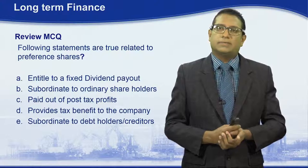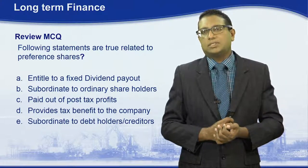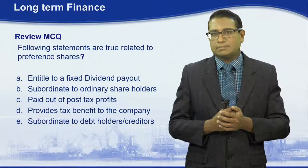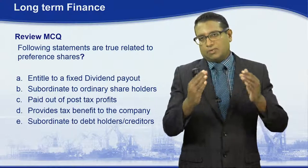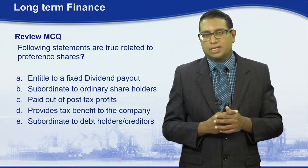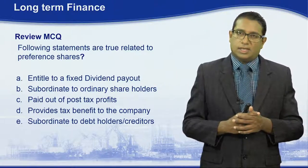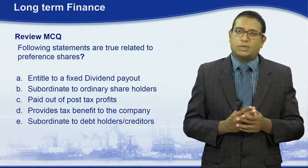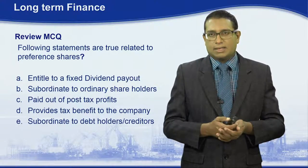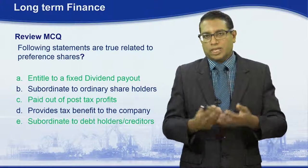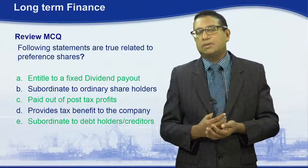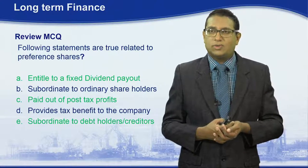The second MCQ question asks which statements are true related to preference shares. The five statements are: preference shares are entitled to a fixed dividend payout; subordinate to ordinary shareholders; paid out of post-tax profits; provides tax benefit to the company; and subordinate to debt holders. The correct answers are: preference shareholders are entitled to a fixed dividend payout — true; they are not subordinate to ordinary shareholders — that statement is false.